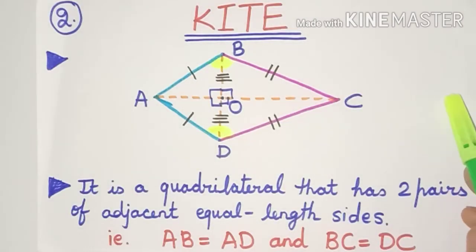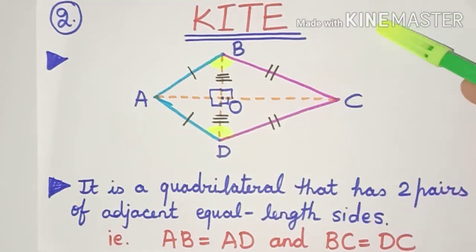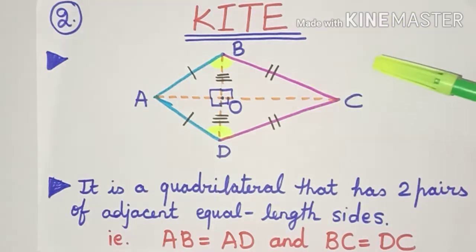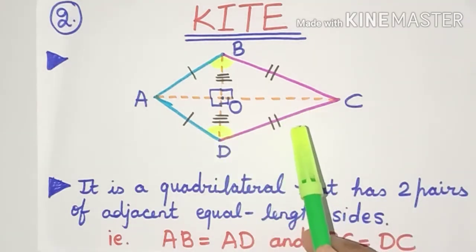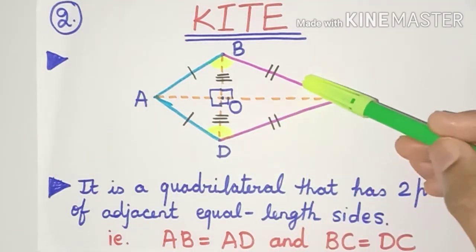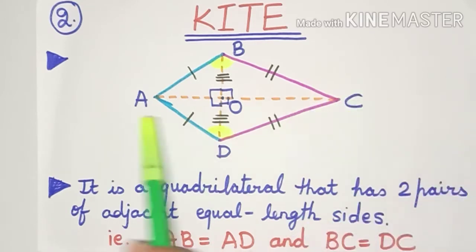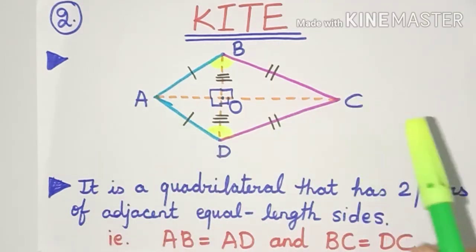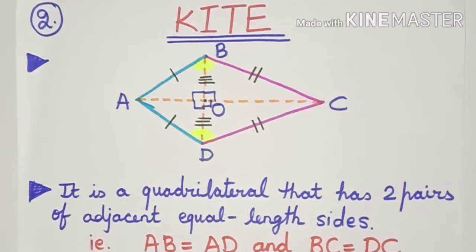After trapezium, the next type of quadrilateral is a kite. A kite is that quadrilateral which has two pairs of adjacent equal-length sides. In this figure it's a quadrilateral where these two sides are equal in length and these two other sides are also equal in length. This is called a kite, and it is very similar in shape to the real-life kite that we play with.